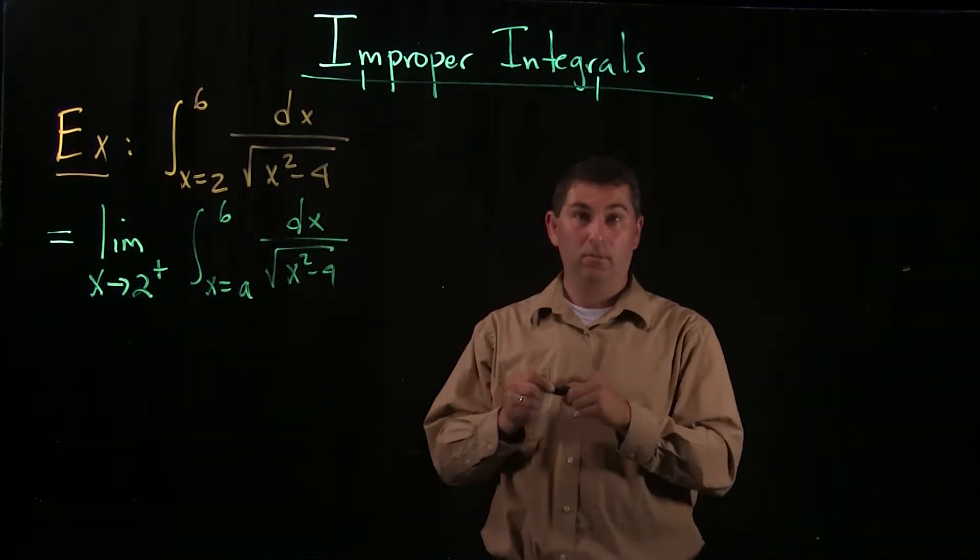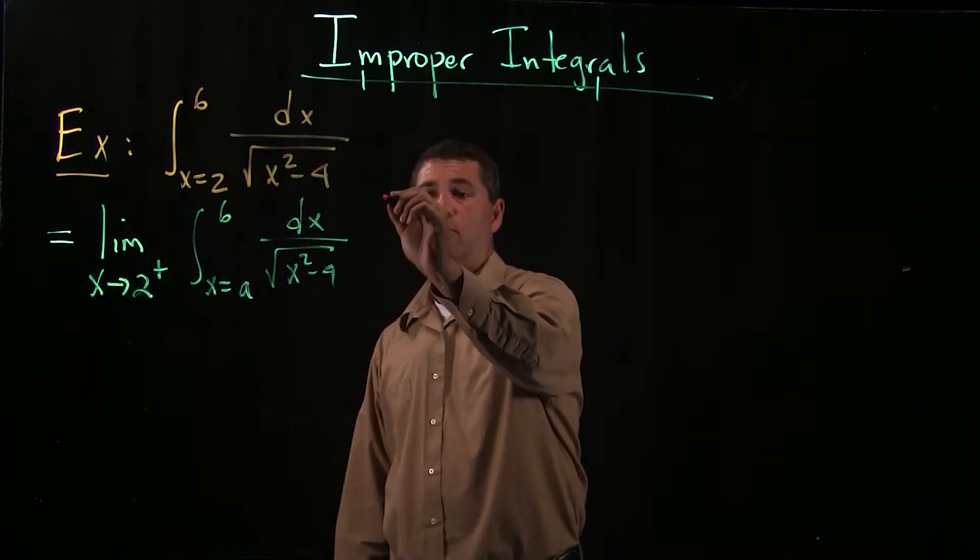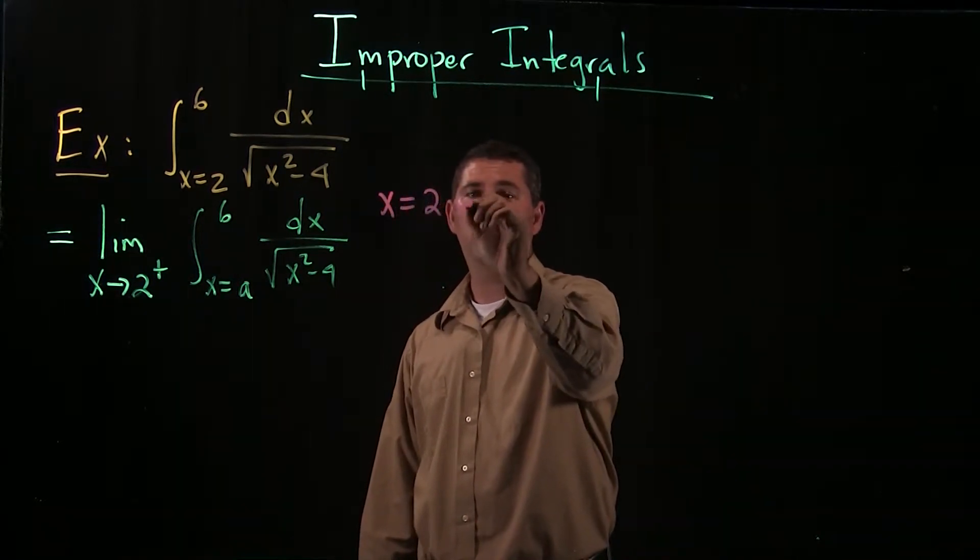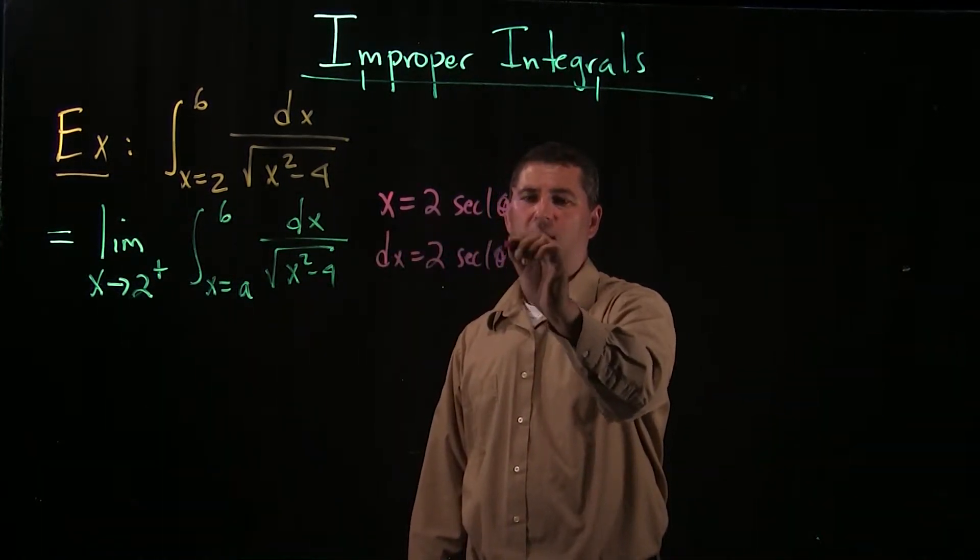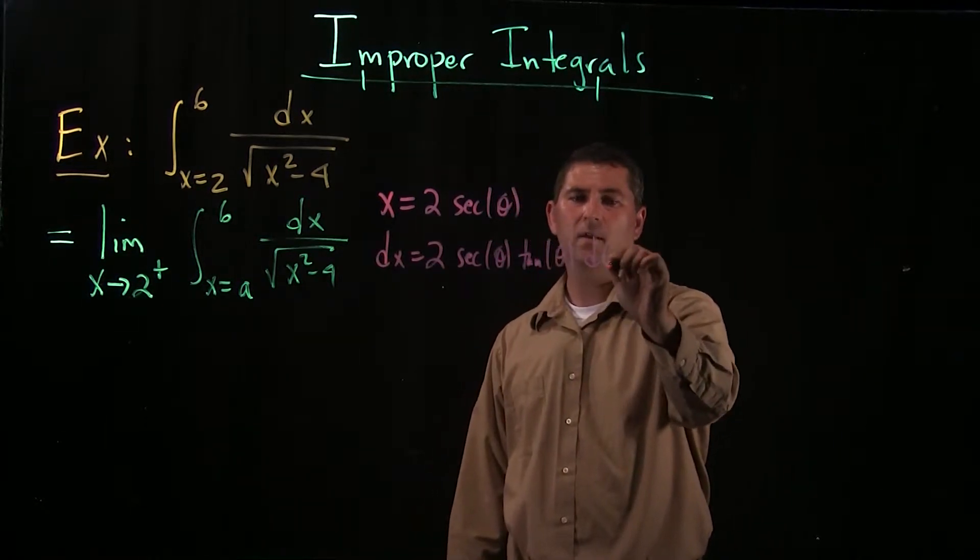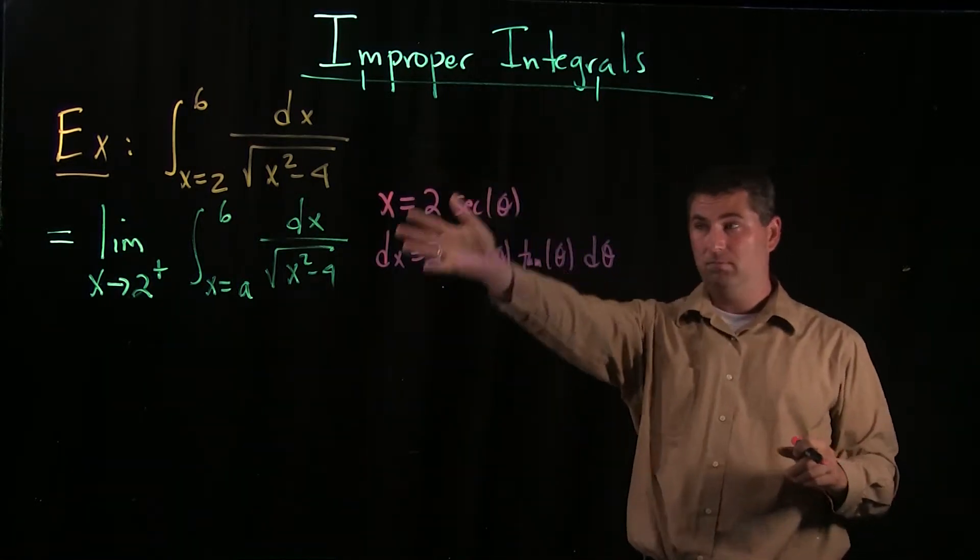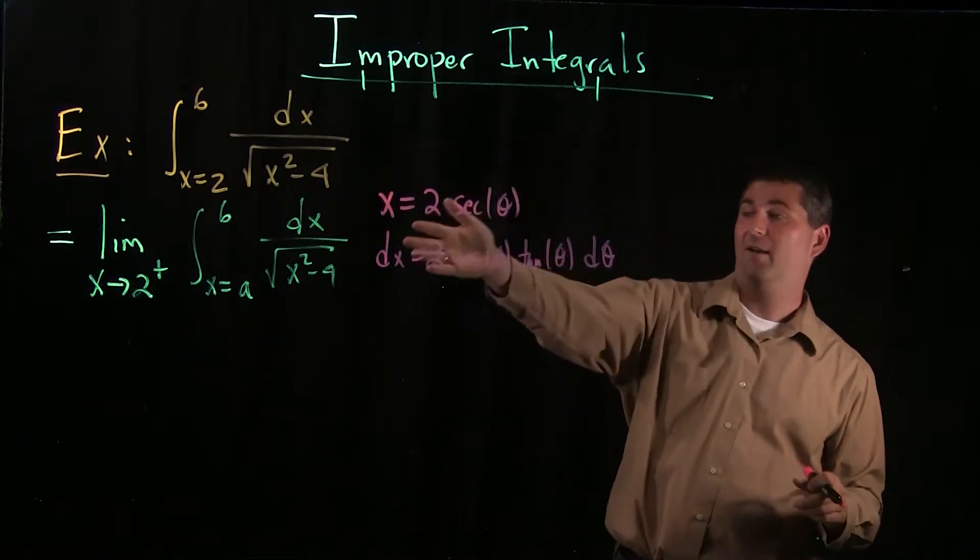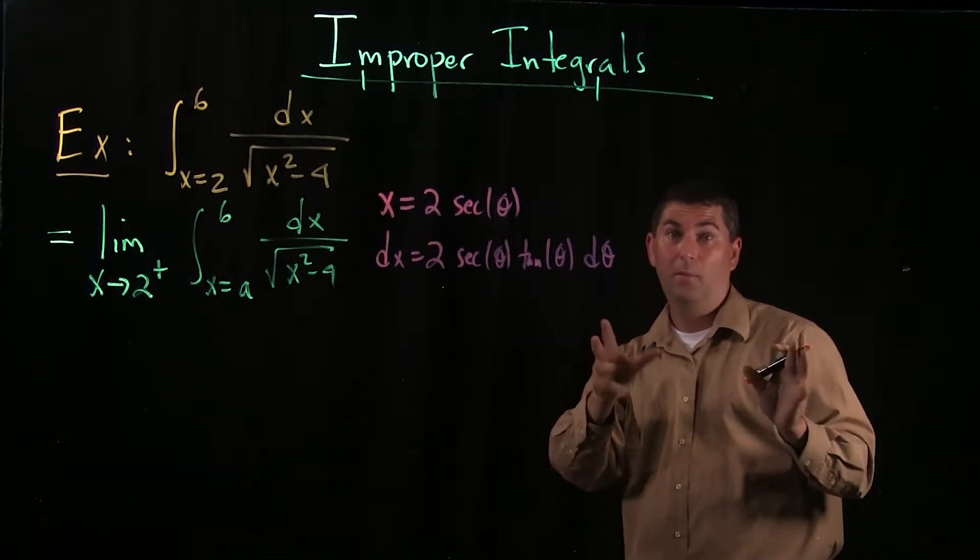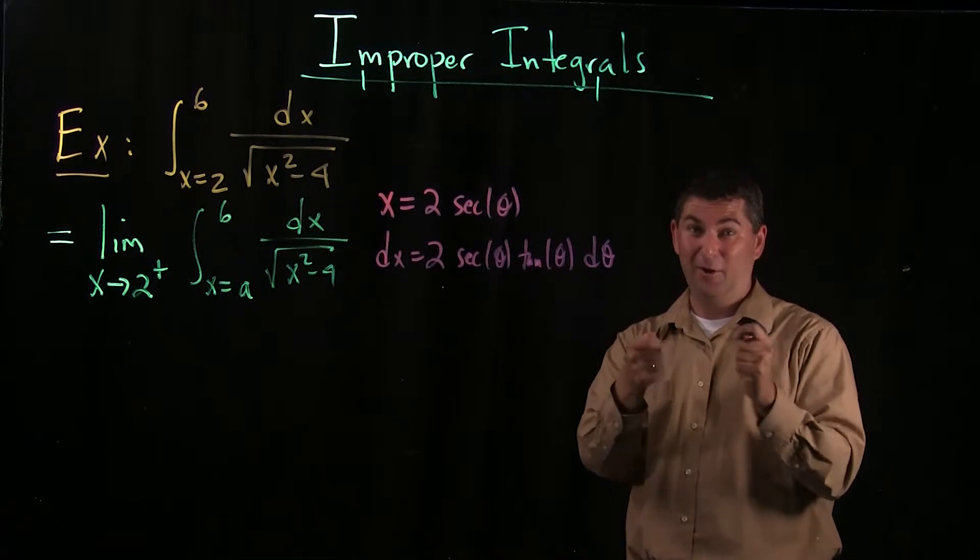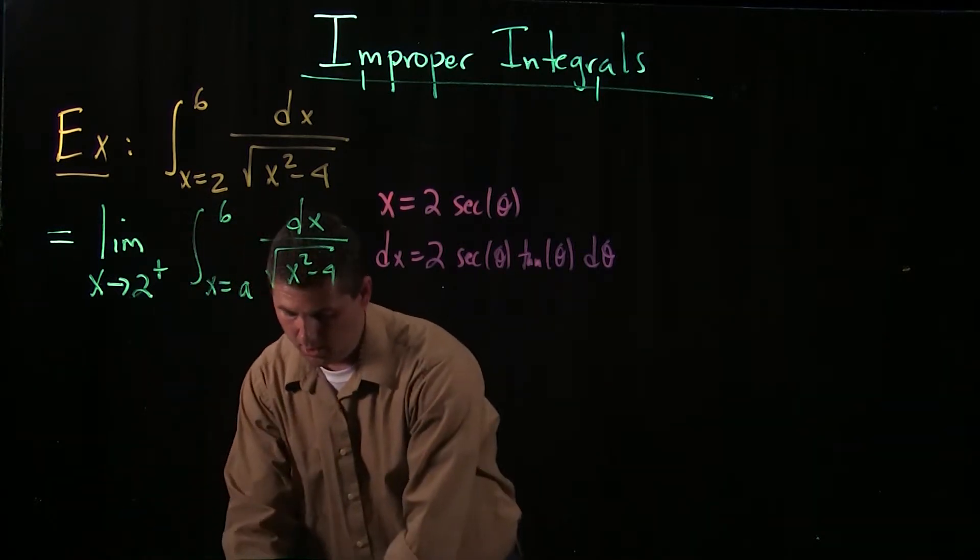That's no bueno, we are not allowed to divide by 0. When we do, puppies get kicked. Don't kick puppies. So we're going to have to set this up with a limit. We're going to have to replace this 2 by some value, and then we'll let the value get closer and closer to 2. So we rewrite this as a limit as a approaches 2 from above, the integral from a to 6, dx over root x squared minus 4. Now it's at this point that you can say we want to do a trig substitution. So the trig substitution would be x equals 2 secant of theta, so that your dx will be 2 secant of theta tangent of theta d theta. I'm going to actually skip ahead and jump ahead here.